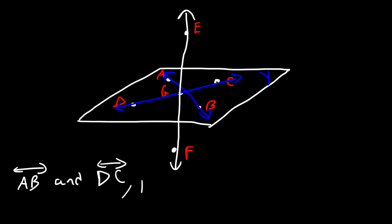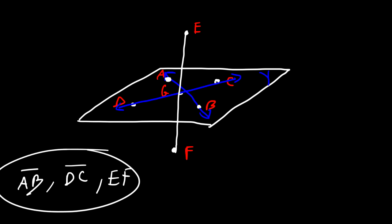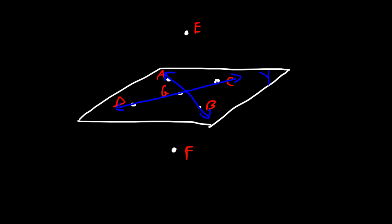What about coplanar segments? The answer is the same as for coplanar lines. Segment AB is coplanar with segment DC. However, segment EF is non-coplanar with AB and DC. So you can have coplanar segments and non-coplanar segments.